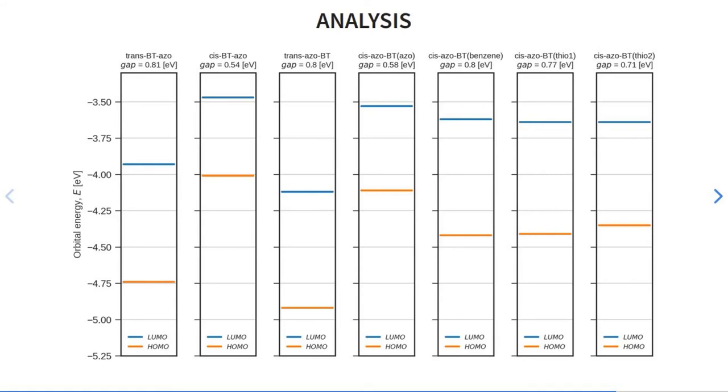For example, for the system cis-BTO-Azo with tip, the energy gap is 0.54 eV, but for the same isolated molecule, the energy gap is 2.3 eV. It's a result from our previous work.